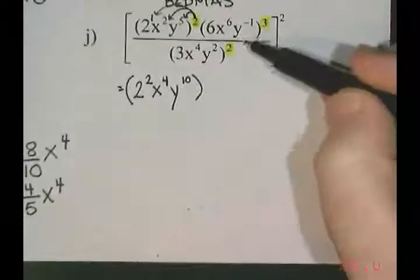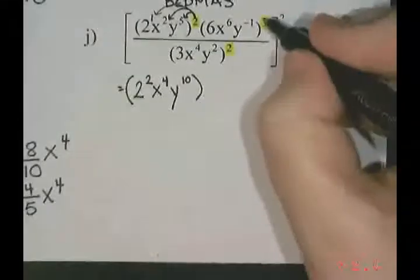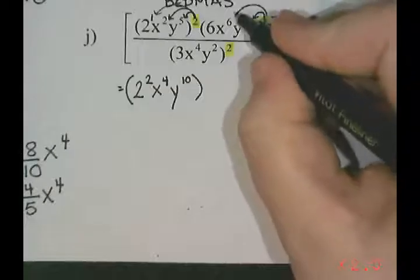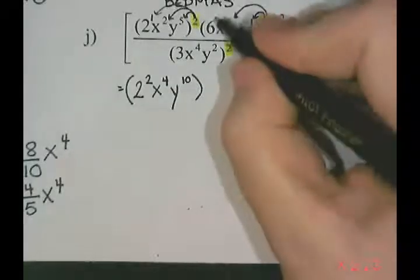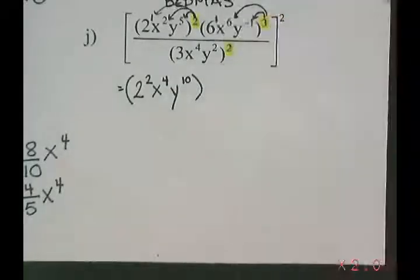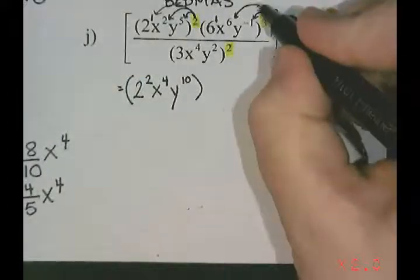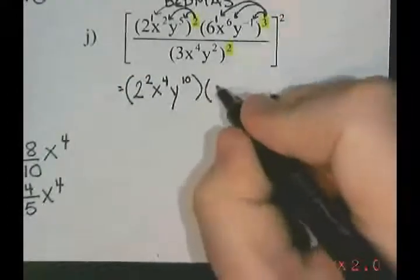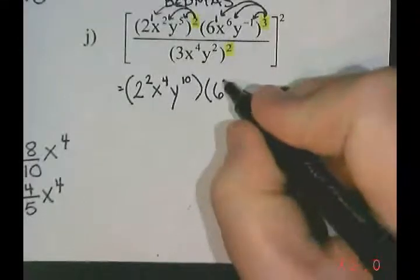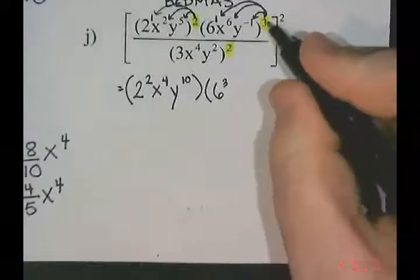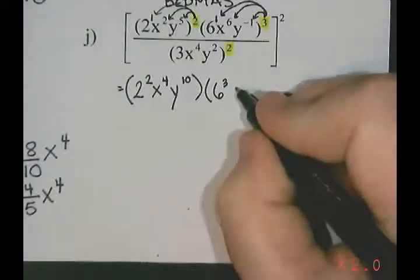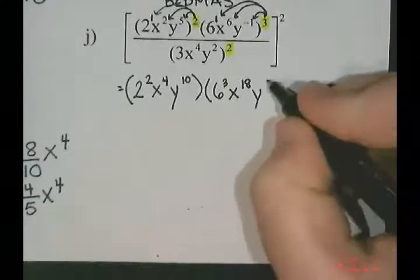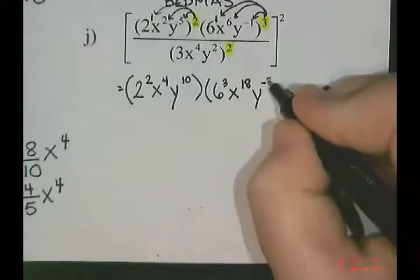When I take a look at the next bracket, that power of 3, I'm going to multiply it into all of the exponents — the 1 on the x, the 1 on the y, and there's a secret 1 on the 6. So 6 to the power of 1 times 3 is 3, x to the 2 times 3 gives me 6 to the... x to the 6, and y to the negative 1 times 3 is negative 3.